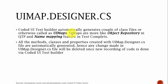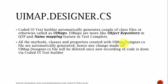The uimap.designer.cs file is automatically generated by the Coded UI Test Builder as a couple of class files, otherwise called UIMaps. UIMaps are more like the object repository in QTP and name mapping features in TestComplete. All the methods, classes, and properties created within uimap.designer.cs are automatically generated. Hence any change made in the uimap.designer.cs file will be deleted once a new recording is done via Coded UI Test Builder.